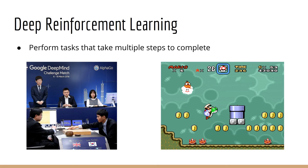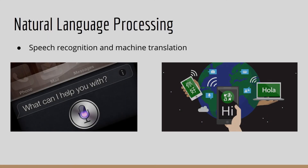Deep learning has also been applied in the field of reinforcement learning, which excels at tasks that take multiple steps to complete, like playing a video game. Deep reinforcement learning agents have beaten world champions in the strategy game Go, and in modern video games such as CS:GO and Dota 2 — things we wouldn't have dreamed of just 10 years ago.